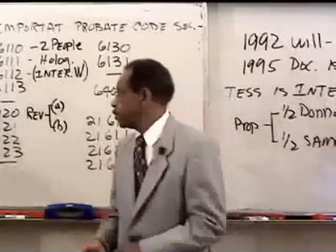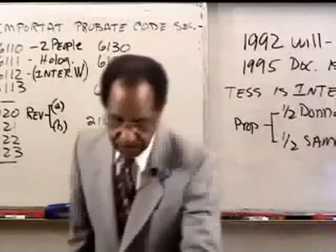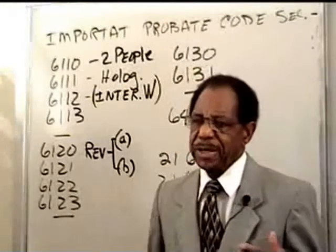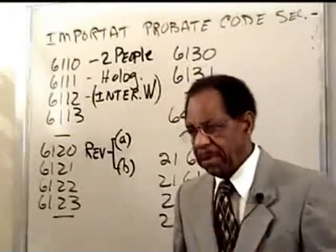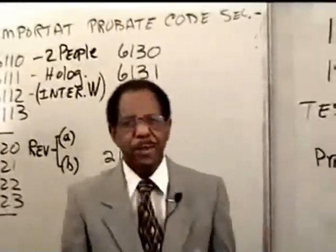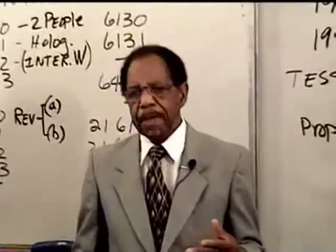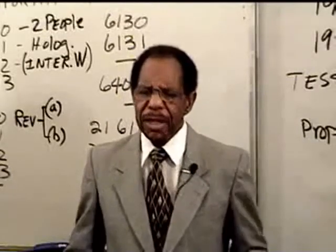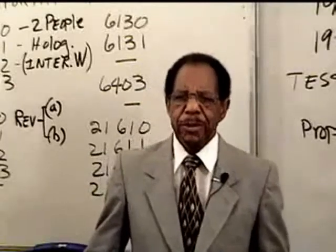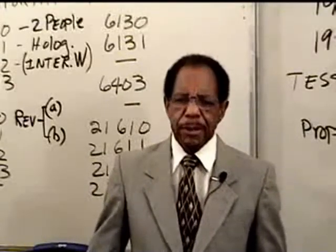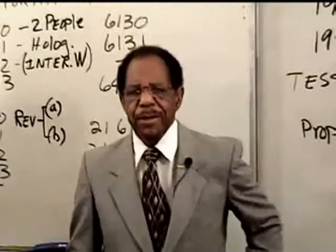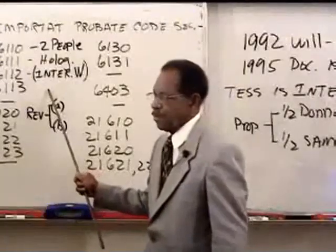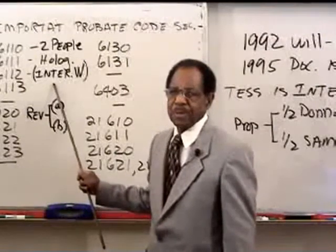That's §6112. Then §6113 is the section that deals with when the will is executed out of state. Normally people are in California and execute the will in California — no problem. But if a California resident goes to Nevada and executes the will, or writes the will here and moves to Nevada, or dies in Nevada — all those options are discussed at §6113. That gets tested from time to time, so be sure to read it.